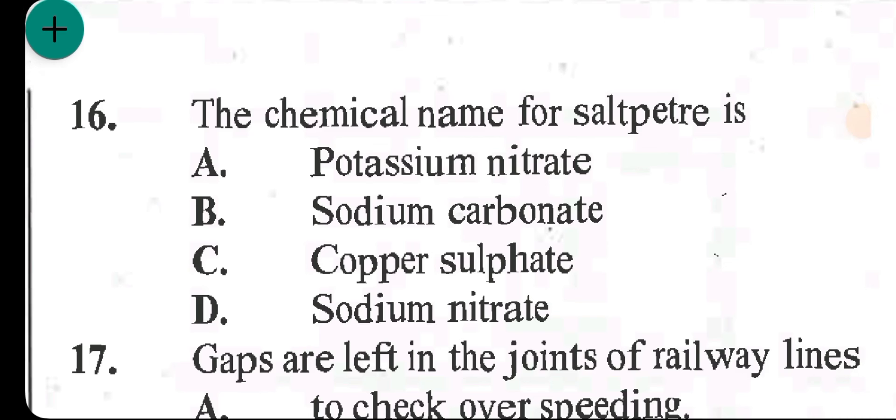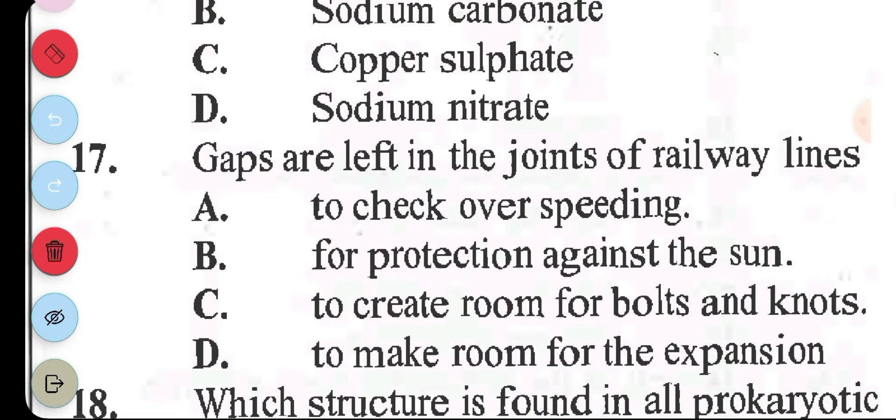Question 16: chemical name for saltpeter is A, potassium nitrate. B, sodium carbonate. C, copper sulfate. D, sodium nitrate. The answer to question 16 is A, potassium nitrate. Question 17: gaps are left in the joint of railway lines A, to check over speeding. B, for protection against the sun. C, to create room for bolts and nuts. D, to make room for the expansion. The answer to question 17 is D, to make room for expansion.